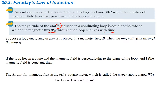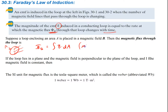Suppose a loop encircling an area A is placed in a magnetic field. The magnetic flux through this loop is given by Φ_B = ∫B · dA — that is, the magnetic field times the area. If the loop lies in a plane and the magnetic field is uniform and perpendicular to that plane, we can pull B out of the integral, so the flux simplifies to Φ_B = BA.